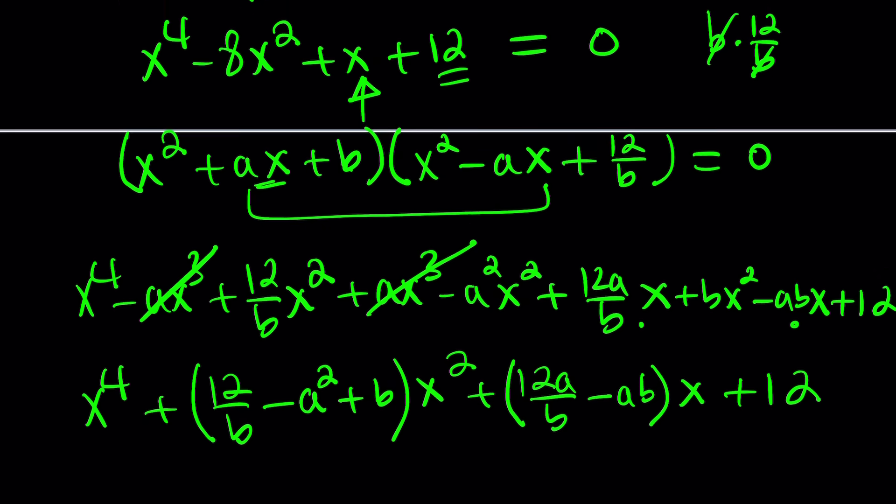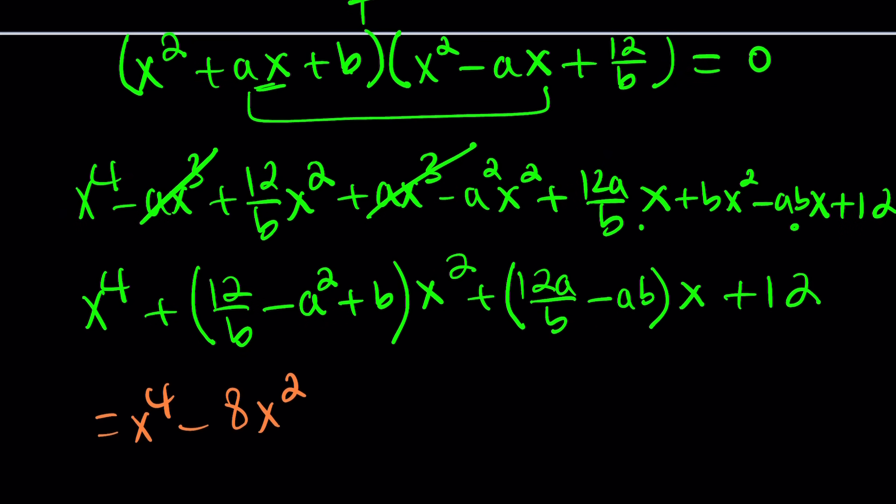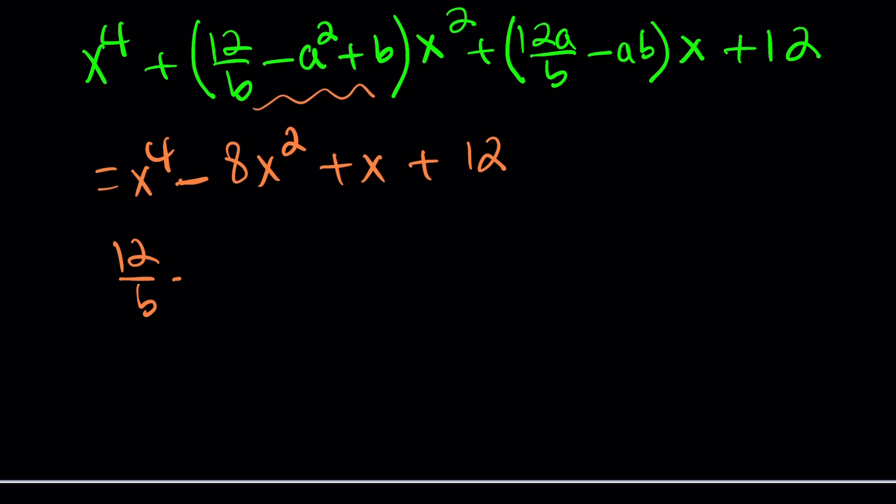We should set this equal to x to the fourth minus 8x squared plus x plus 12. If these two things are equal for all values of x, it's an identity. So, 12 over b minus a squared plus b equals negative 8. The coefficient of x is 1, so 12a over b minus ab equals 1. You got yourself a system.